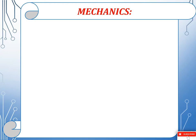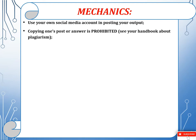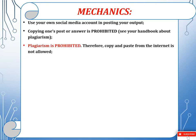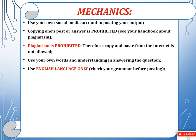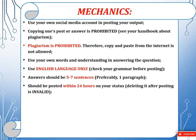Here are the mechanics. Use your own social media account in posting your output. Copying one's post or answer is prohibited — see your handbook about plagiarism. Copy and paste from the internet is not allowed. Use your own words in understanding and answering the question. Use English language only, and check your grammar before posting. Your answer should be 5 to 7 sentences only, preferably one paragraph. It should be posted within 24 hours on your status.